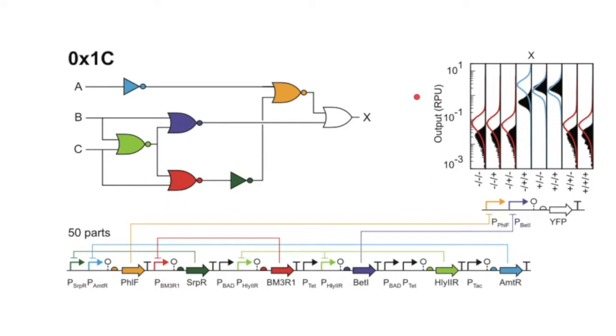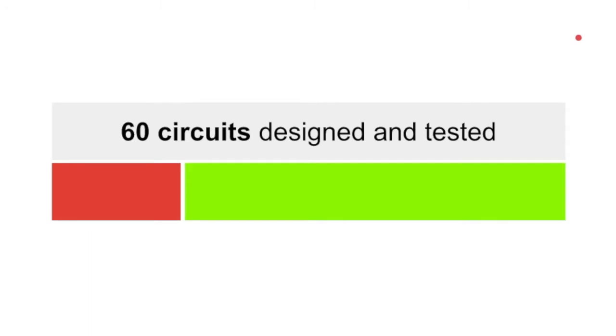the organism is computing the correct Boolean function. Among those 60 circuits designed and tested in the wet lab, only 75% actually performed as expected, while 25% computed a different Boolean function.